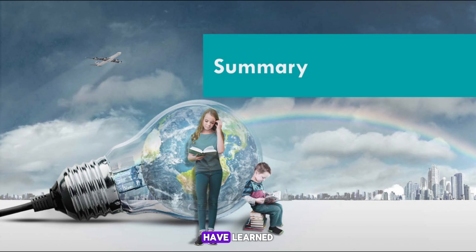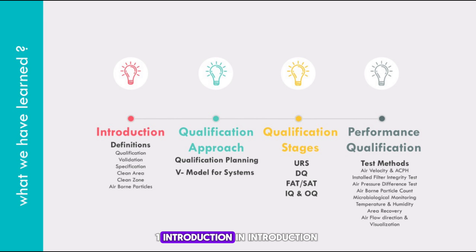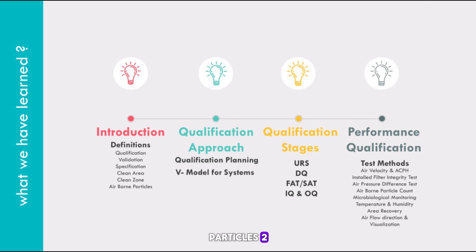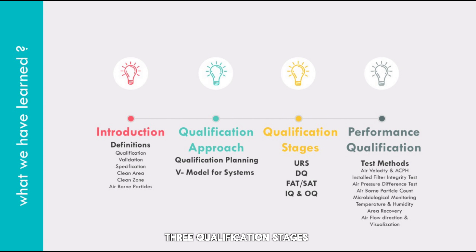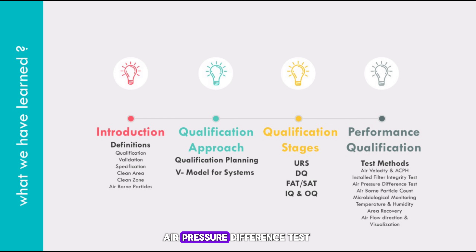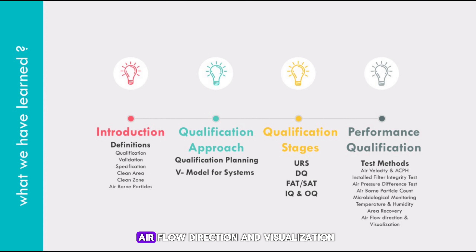Summary of what we have learned in this video: In the Introduction, we discussed definitions of qualification, validation, specification, clean area, clean zone, and airborne particles. In Qualification Approach, we discussed qualification planning and the model for systems. In Qualification Stages, we discussed URS, DQ, FAT, SAT, IQ, and OQ. In Performance Qualification, we discussed test methods including air velocity and ACPH, installed filter integrity test, air pressure difference test, airborne particle count, microbiological monitoring, temperature and humidity, area recovery, and airflow direction and visualization.